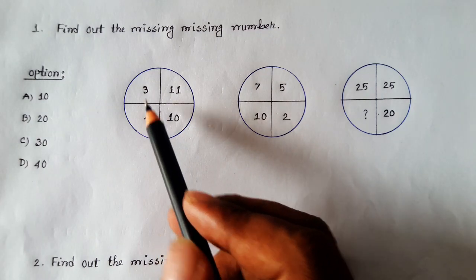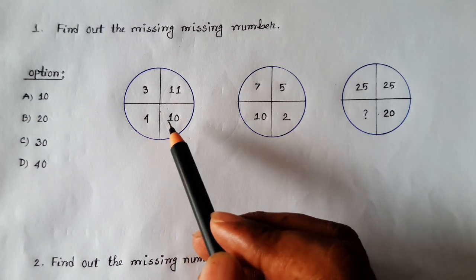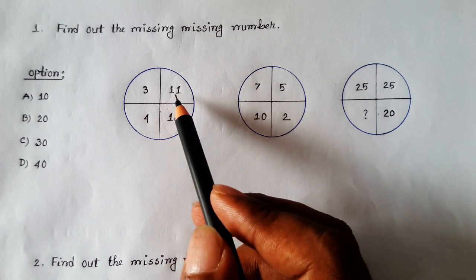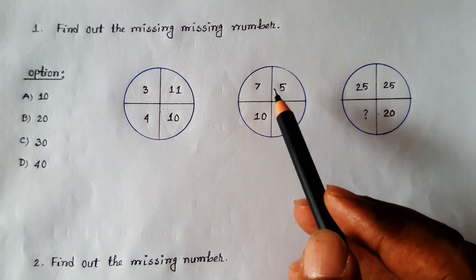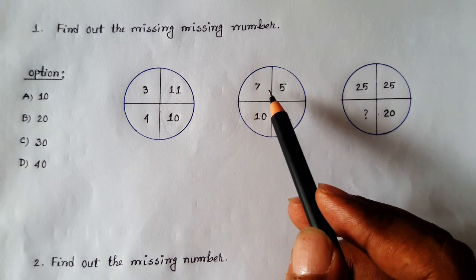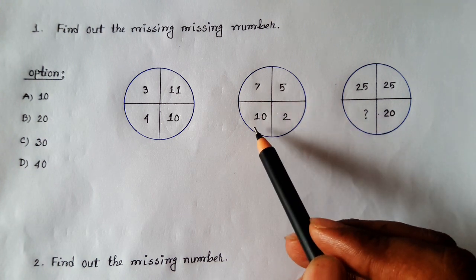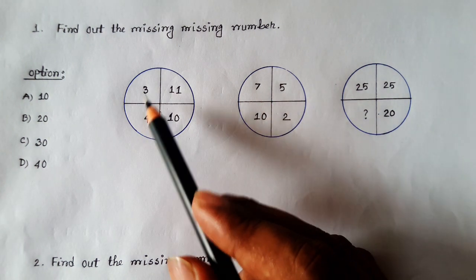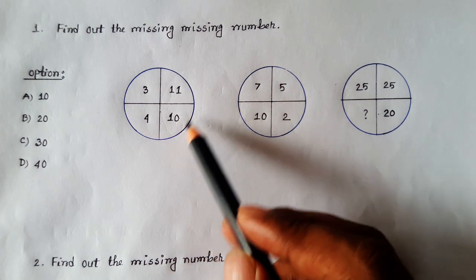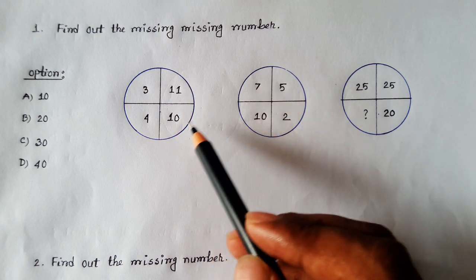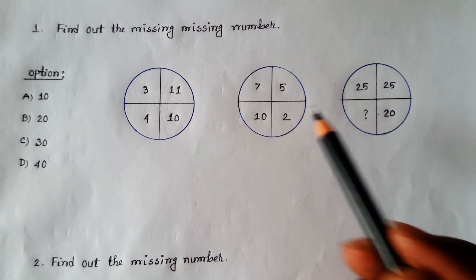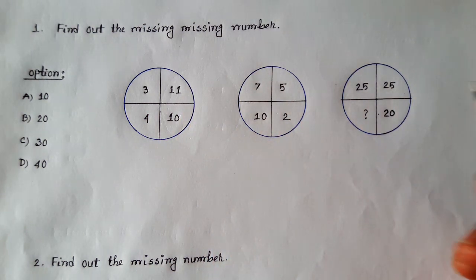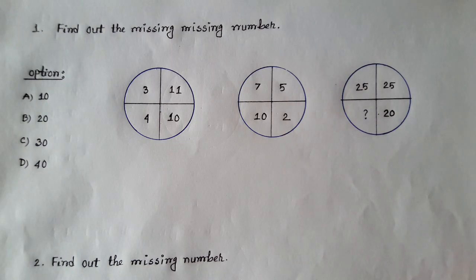So you can see here 3, 4, 10, 11. You can also see here 7, 10, and 5. And you can see here 2, and 1. So we are going to work through this.